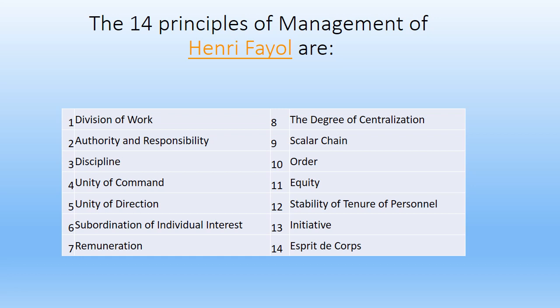The next principle is Authority and Responsibility. Authority refers to the right to give commands and receive obedience from the subordinates. On the other hand, Responsibility is the obligation to perform the duties on time. This means when a person is accountable for the duties assigned to him, he is responsible for it. Fayol emphasized on maintaining a proper balance between these two as they go hand in hand.